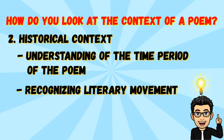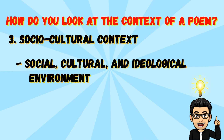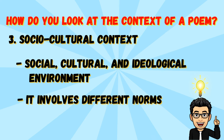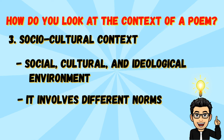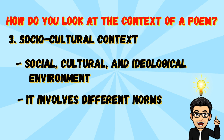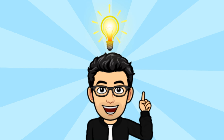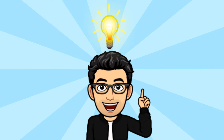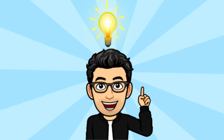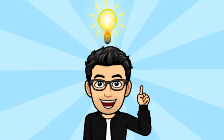The last one is socio-cultural context. This refers to the social, cultural, and ideological environment in which a poem is created and received. It includes societal norms, values, beliefs, traditions, and cultural identities, which can influence the poem's themes, symbols, language, and how it is interpreted by different audiences. By considering these various aspects of context, you can develop a more nuanced understanding of a poem and its layers of meaning. Context helps you see beyond the surface of the text and appreciate the complex interplay between the poem, the poet, and the world in which it was created.